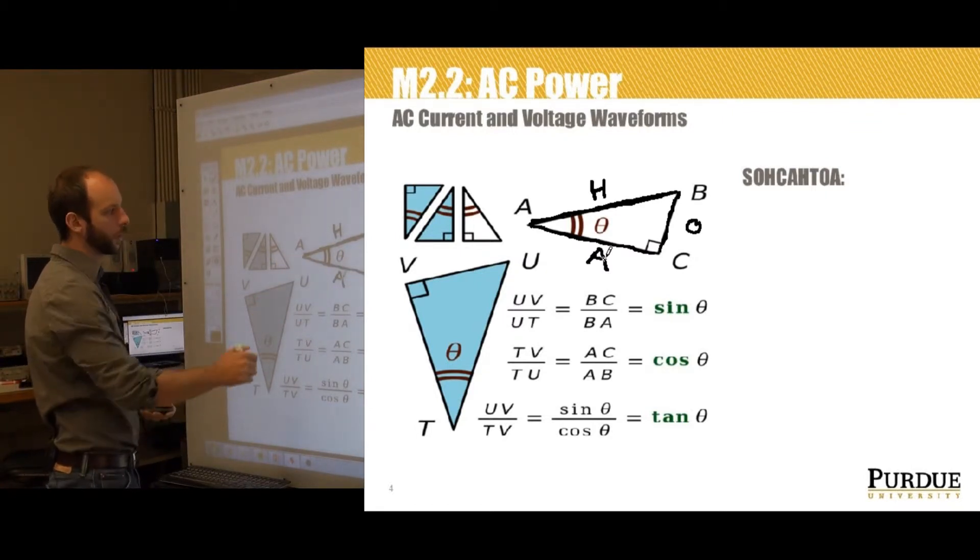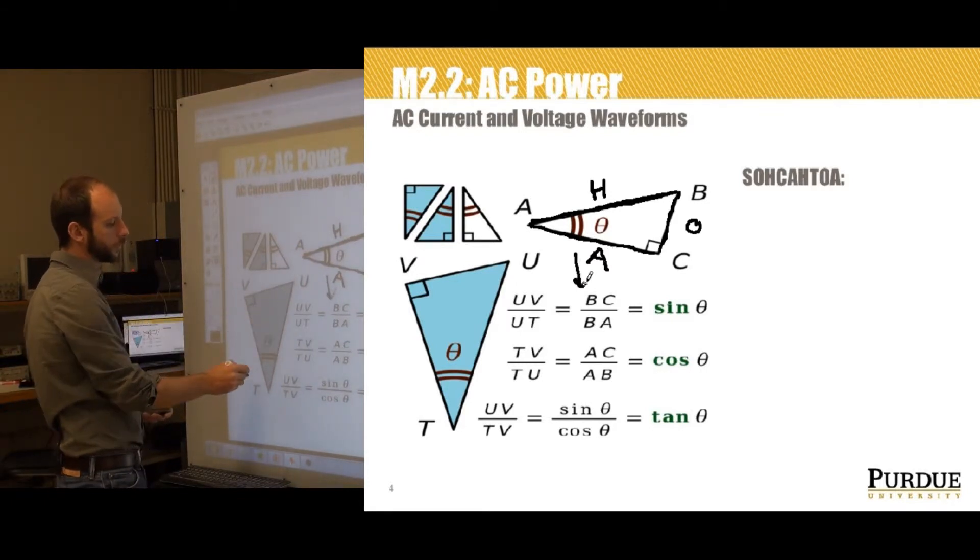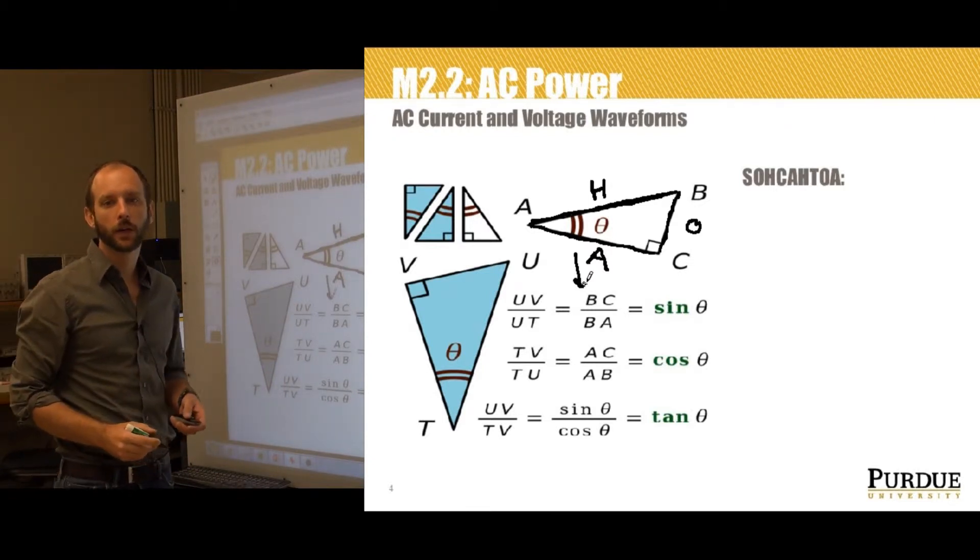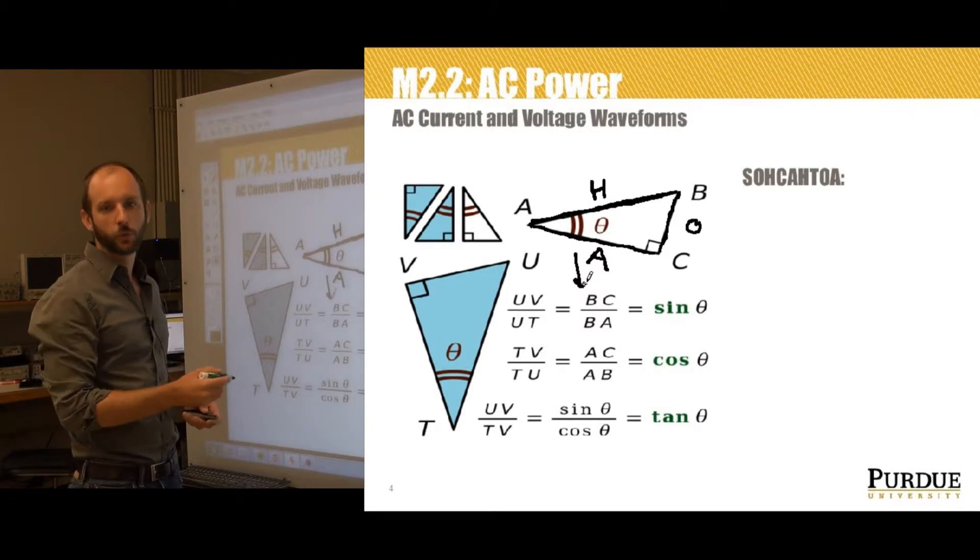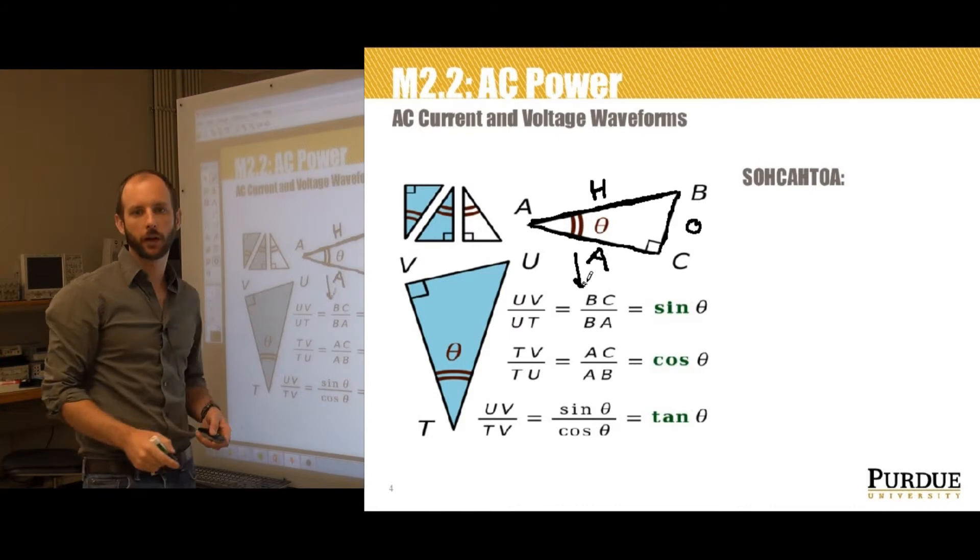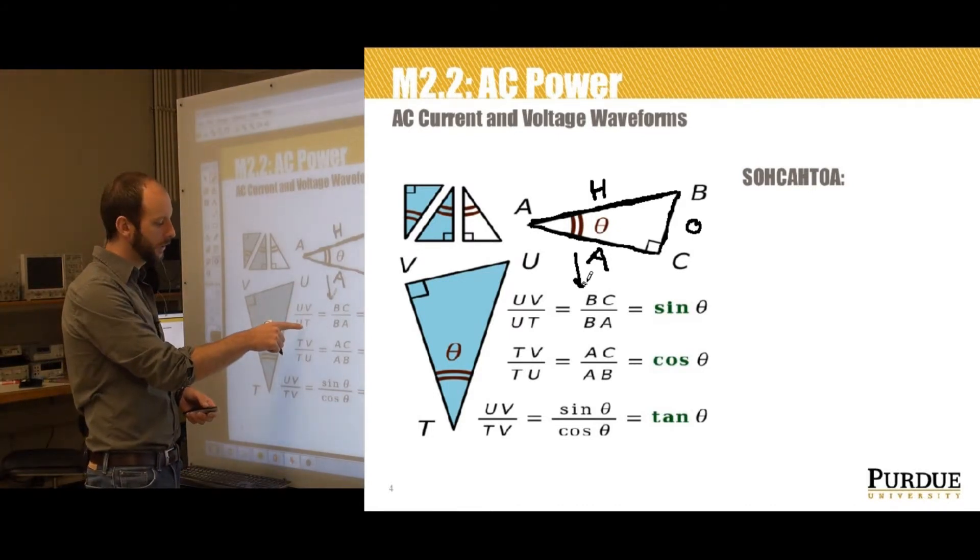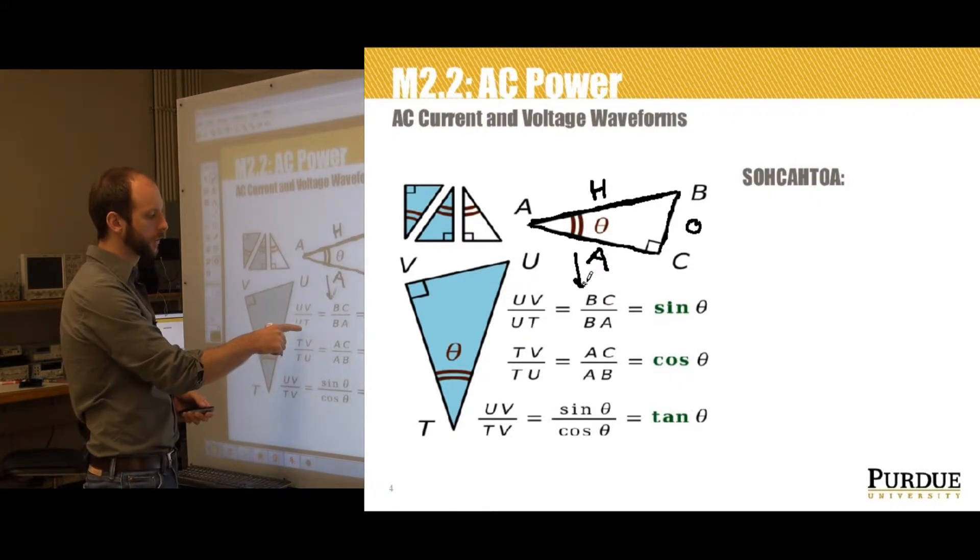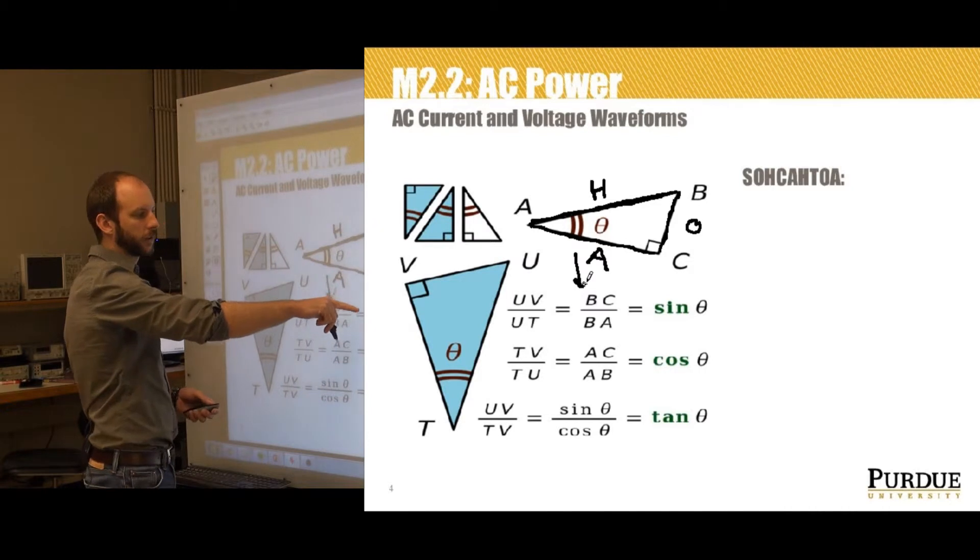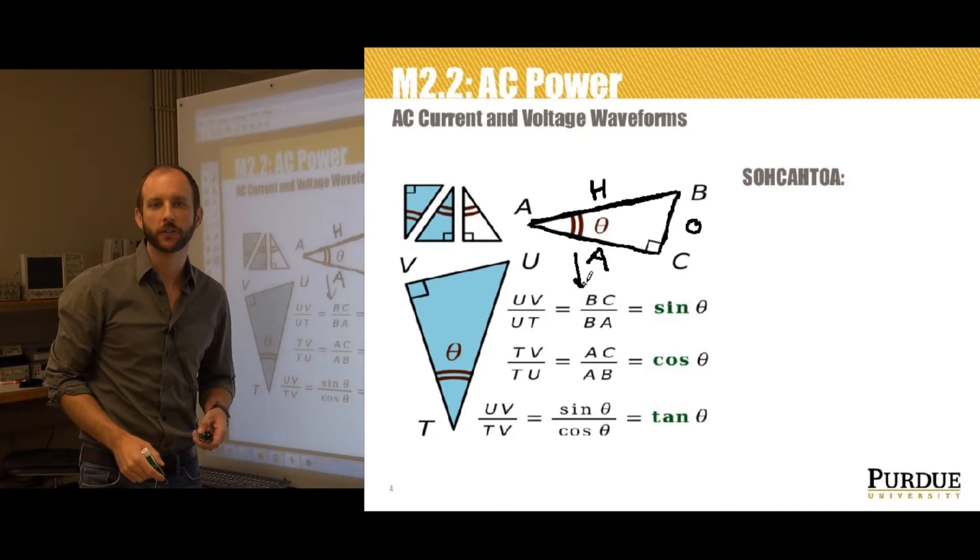So we've got one relation shown here for this triangle, and then we repeat the relation for sine of theta for this other triangle. These ratios are always constant for a given angle and don't depend on the size of the particular triangle. So these ratios, UV to UT, since it's the sine function which is opposite over hypotenuse, it's the same as BC over BA, despite the fact that this triangle and this triangle are of different sizes.